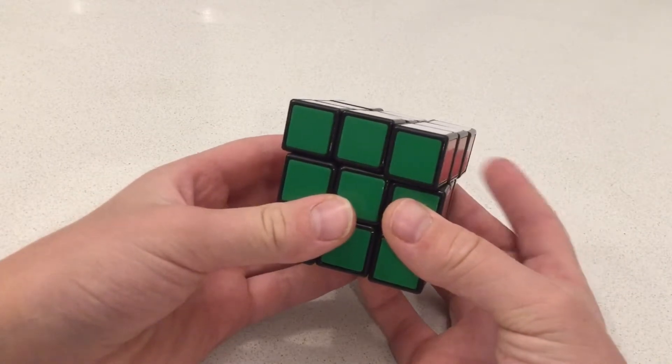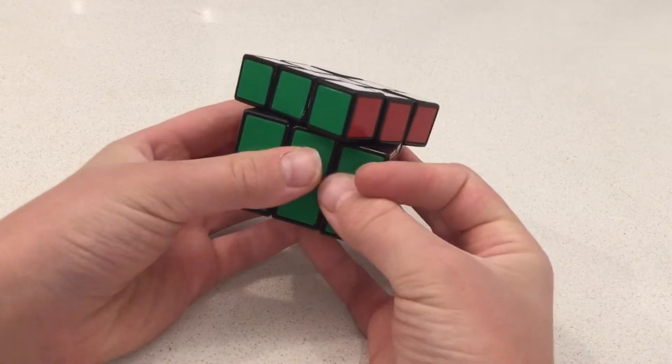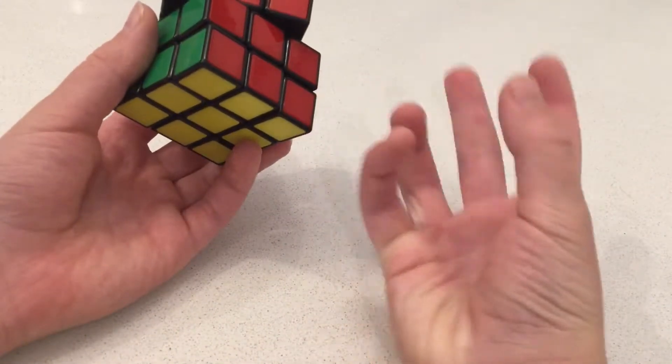Want a bad cube? Just get the Rubik's 3x3. It can only do a U2 max. It's absolutely terrible.